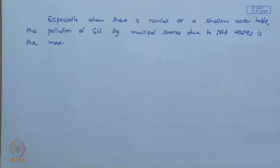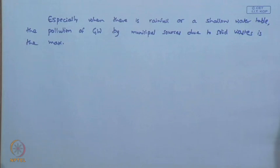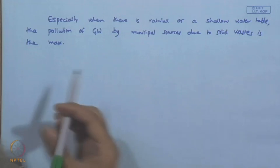Sewer leakage, liquid waste, and solid waste constitute most of the groundwater pollution due to municipal causes. Now let us come to groundwater pollution by industrial causes.